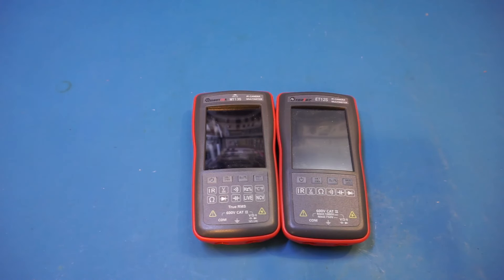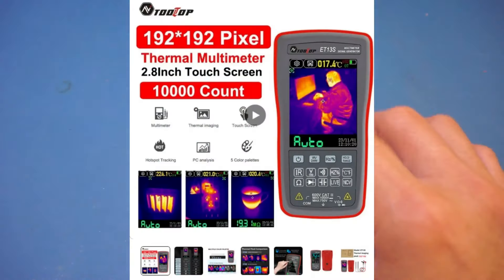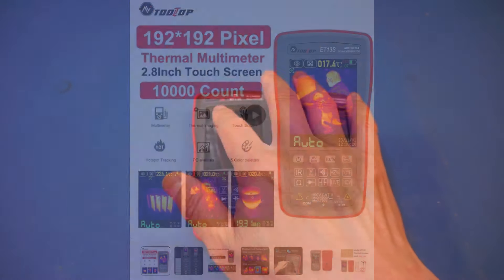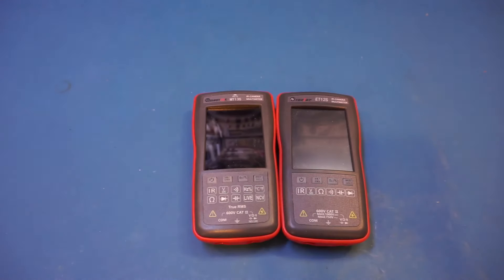This kind of practice of using different branding with the same product is very common among Chinese products. I just did some googling, and sure enough, you can get the same meter under the ToolTop brand instead of the MUSTO. Now, for the ToolTop, the model number is the ET13S instead of the MT13S.